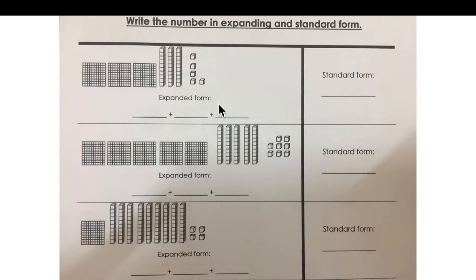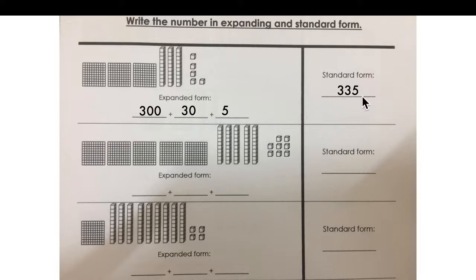I will do it quickly for those who don't want to do it alone. Let's count hundreds. How many hundreds do we have? Three hundred. How many tens? Three tens — thirty. How many ones? Five. If we take the first digit, we have 3, 3, 5. That will be the standard form — three hundred thirty-five.